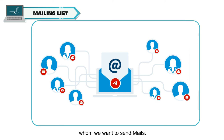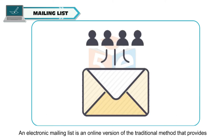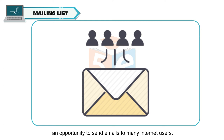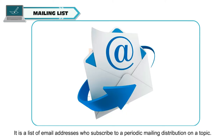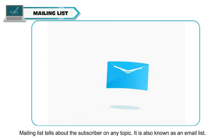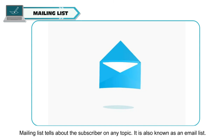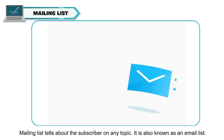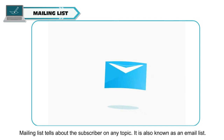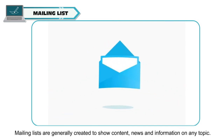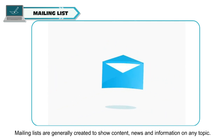A mailing list consists of names and addresses of people to whom we want to send mails. An electronic mailing list is an online version of the traditional method that provides an opportunity to send emails to many internet users. It is a list of email addresses who subscribe to a periodic mailing distribution on a topic, also known as an email list. Mailing lists are generally created to share content, news and information on any topic.